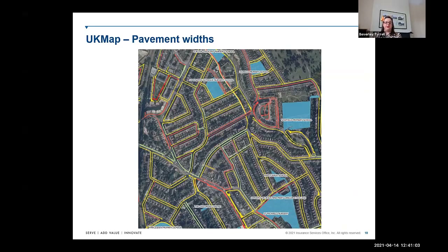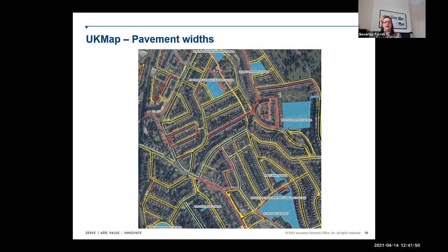One application highlighted during the COVID-19 pandemic was planning social distancing measures. Many London authorities reviewed the width of their pavements to identify those two to three metres or less, so they could implement measures like pavement widening, one-way systems, or closing pavements entirely. The detailed view shown is in central London, with pavements colour-coded by minimum width: red for less than two metres, yellow for two to three metres, and green for greater than three metres.